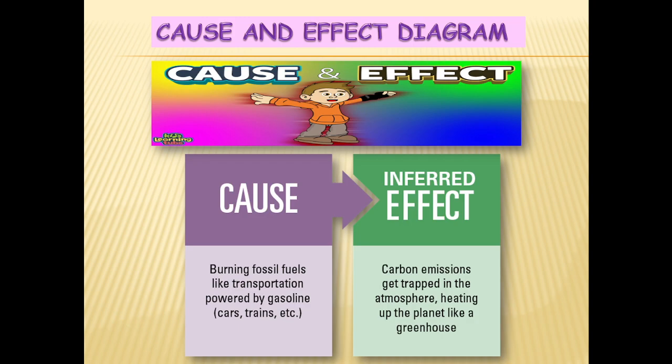This slide explains what cause and effect means. An example of a cause is the burning of fossil fuels like petrol or diesel during vehicle transportation such as cars and lorries. The effect is that carbon emissions get trapped in the atmosphere, heating up the earth like a greenhouse. This leads to global warming.